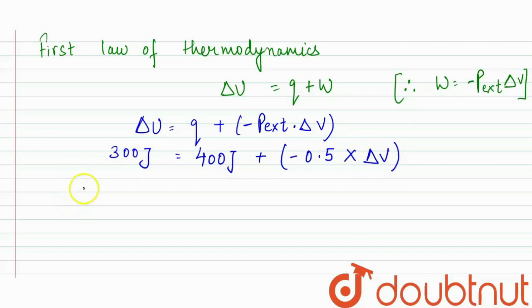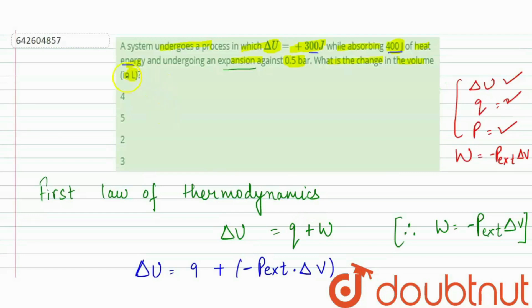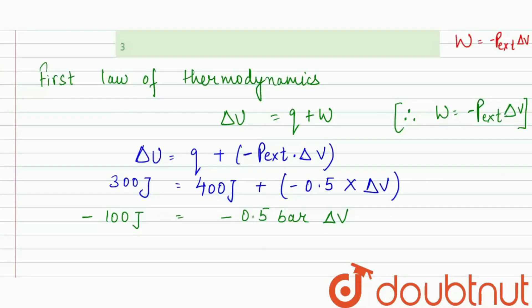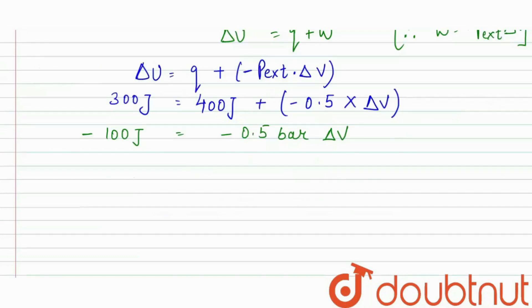So minus 100 joules equals minus 0.5 bar delta V. In the question it is given that we need the value of volume in liters, and we know that 1 liter-bar is equal to 100 joules. So 100 joules equals 0.5 bar delta V, which means 1 liter-bar equals 0.5 bar delta V.